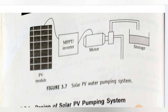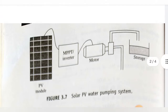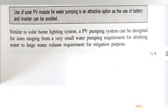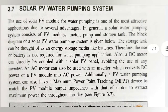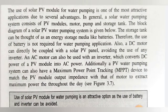In the block diagram, the PV module is there, then the MPPT inverter — that is the inverter — which will convert DC current generated by the solar module to AC current for driving the electric motor. That motor will pump the water and store it at a higher level. The storage tank can be thought of as an electric energy storage media like a battery. Therefore, the use of a battery is not required for water pumping applications.